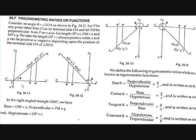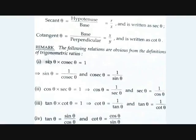Cosecant, written as csc, is the inverse of sine. Cosec theta equals hypotenuse by perpendicular, which is R by Y. Secant theta is hypotenuse by base, which is R by X, written as sec theta. Cotangent, written as cot, is base by perpendicular.